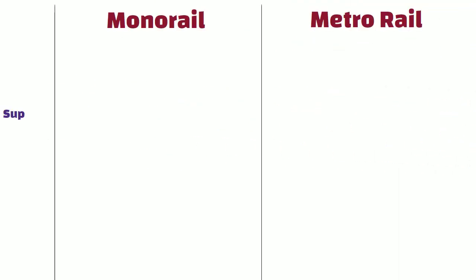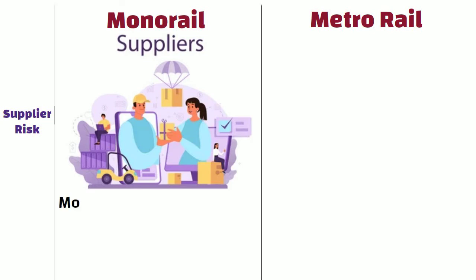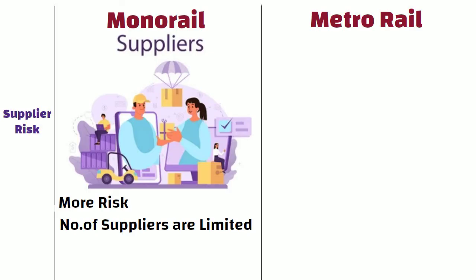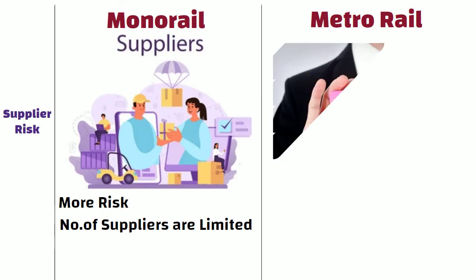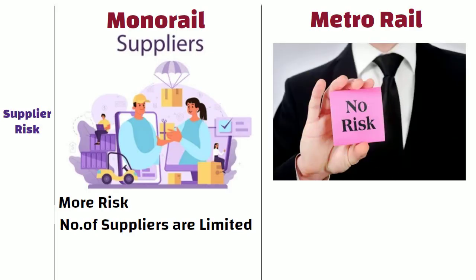Supplier risk. Monorail procurement carries more risks than metrorail, as the number of suppliers is limited. Whereas in the case of metrorail, there is no such risk.